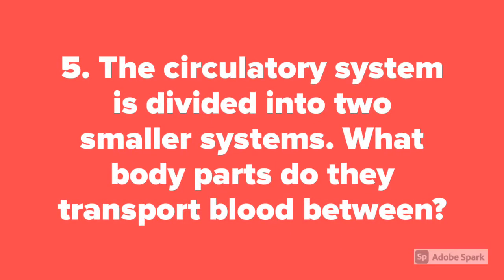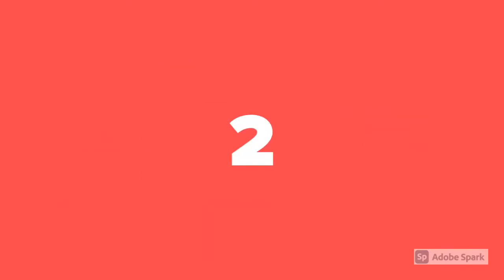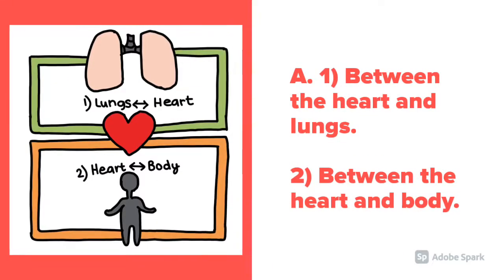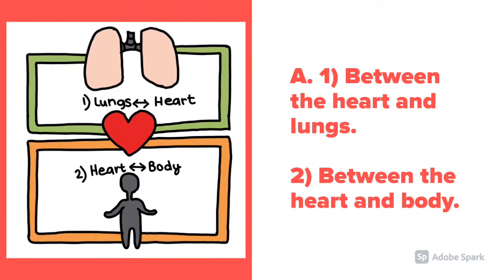Question 5. The circulatory system is divided into two smaller systems. What body parts do they transport blood between? The first system transports blood between the heart and lungs, and the second one between the heart and the body.